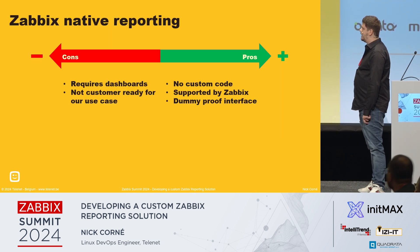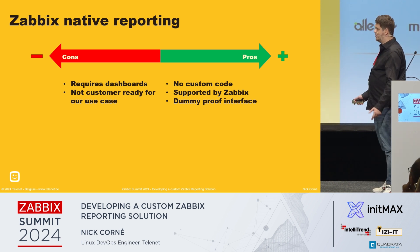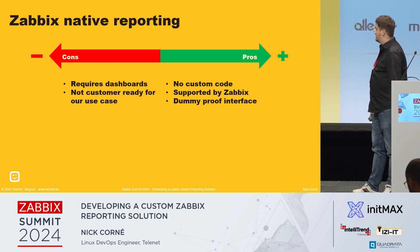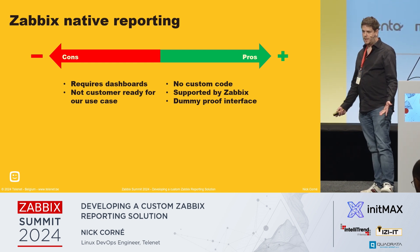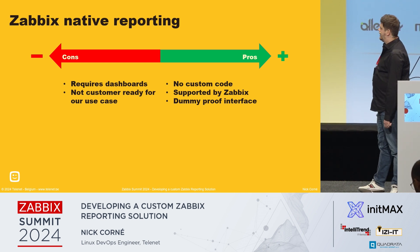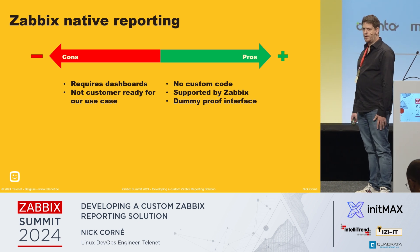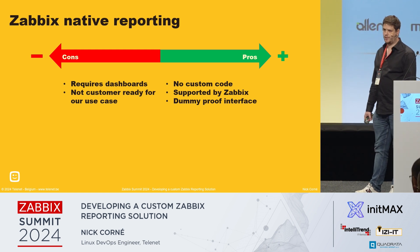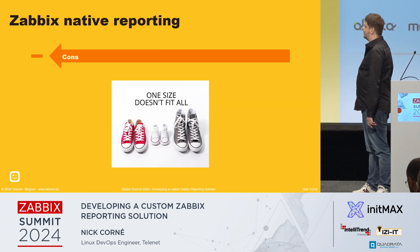The next option was checking out the native Zabbix reporting feature, which is now available but wasn't available when we went for Avenue. We don't need any custom code — it's plain inside Zabbix, it's a dummy-proof interface using the dashboard that we all know and love, and it's supported by Zabbix. But the downside is it requires dashboarding, and we don't offer direct dashboard access to Zabbix to our customers. We export the metrics using Grafana, but not directly to our Zabbix.